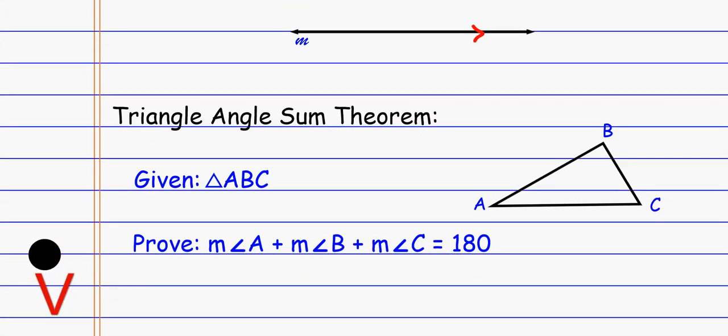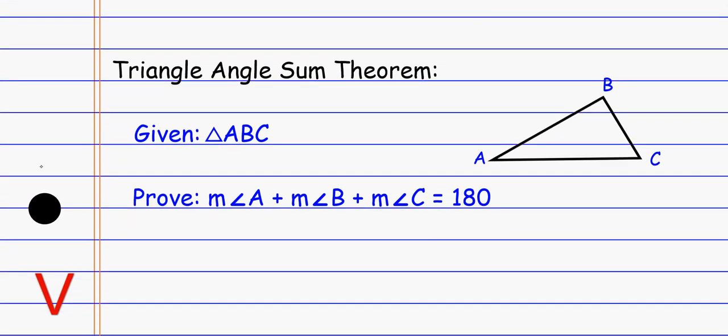Now, the triangle angle sum theorem. You may or may not know this — you might have heard it somewhere before. The angles inside a triangle add up to 180 degrees. That's what we're about to try to prove. So we have triangle ABC. The symbol for a triangle is a little tiny triangle — it almost makes too much sense. I want to prove that the measure of A plus the measure of B plus the measure of C equals 180 degrees — in other words, add up those three angles inside the triangle and get 180.